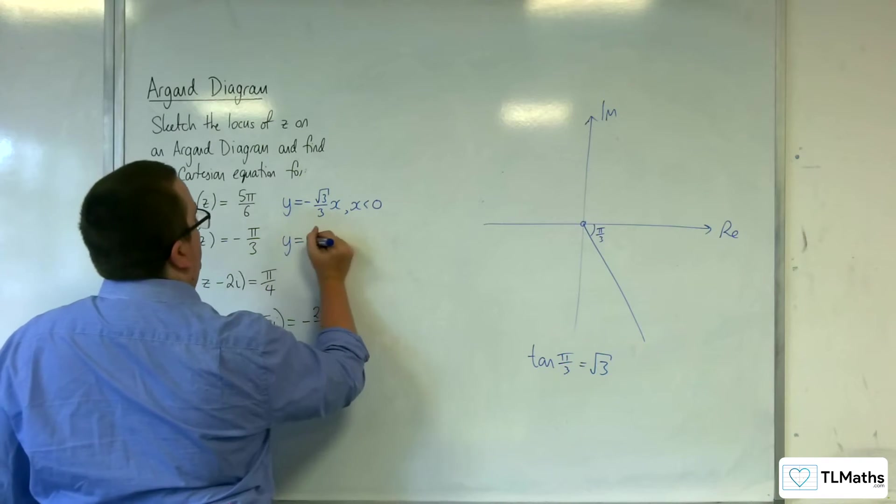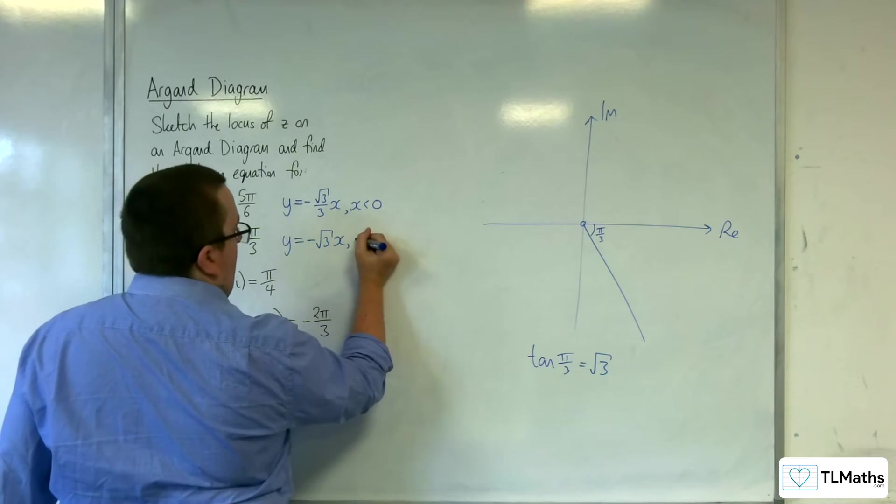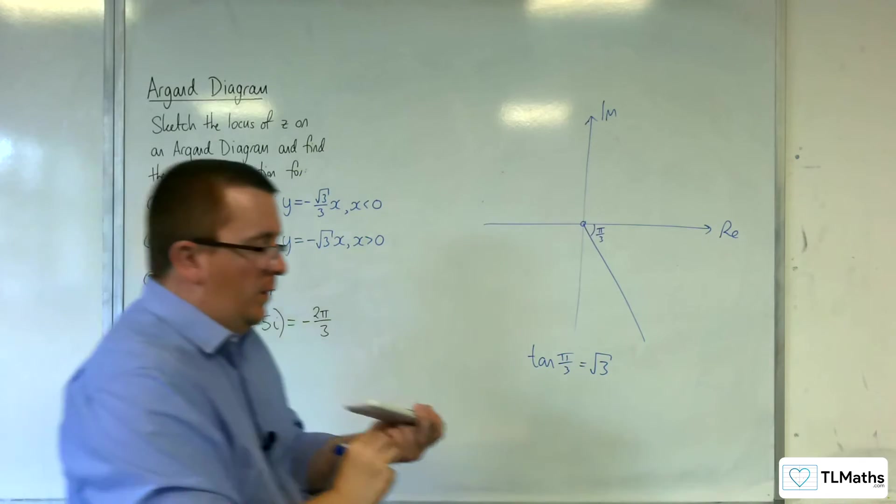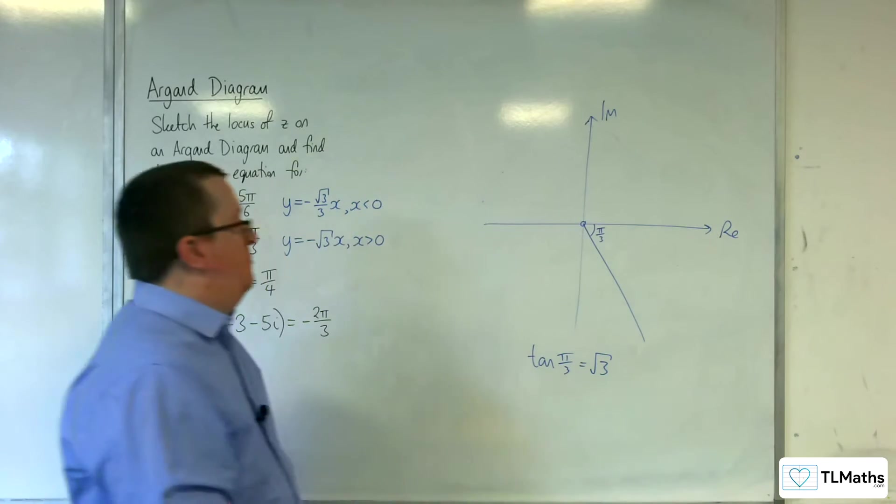So, y is equal to negative √3 x, where x, in this case, is greater than 0. So, that's the equation of my half line.